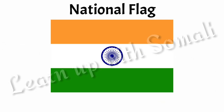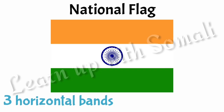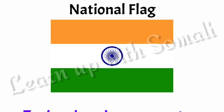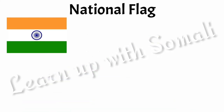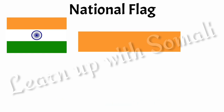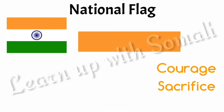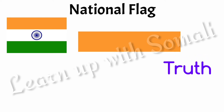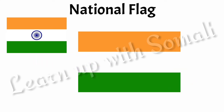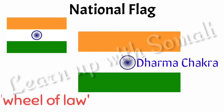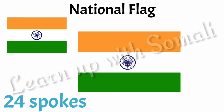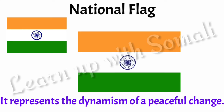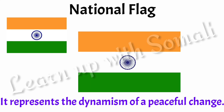Our national flag consists of three horizontal bands of different colors. Saffron is at the top — it stands for courage and sacrifice. White is in the middle — it stands for truth and peace. Green is at the bottom, which stands for prosperity. There is also a Dharma Chakra, or wheel of law, with 24 spokes at the center, representing the dynamism of peaceful change.